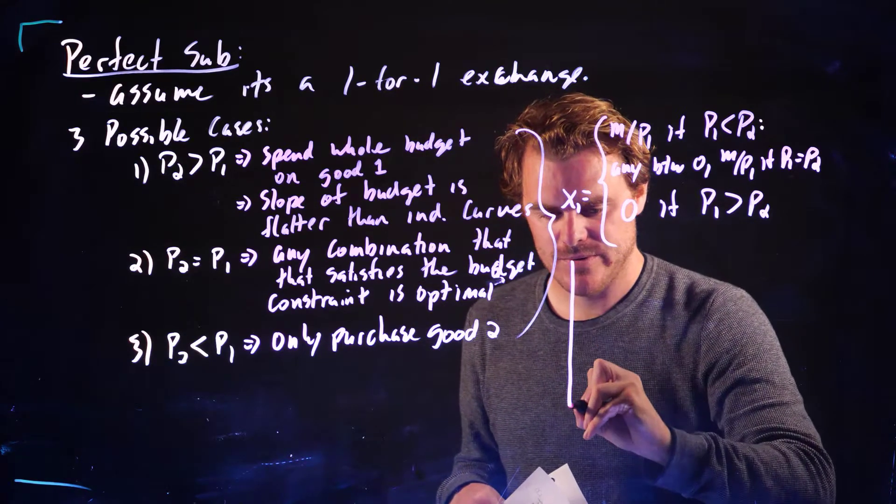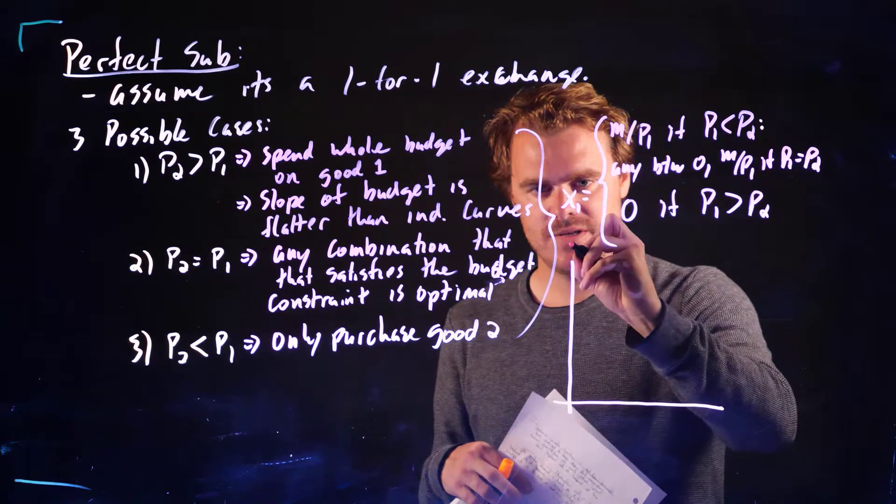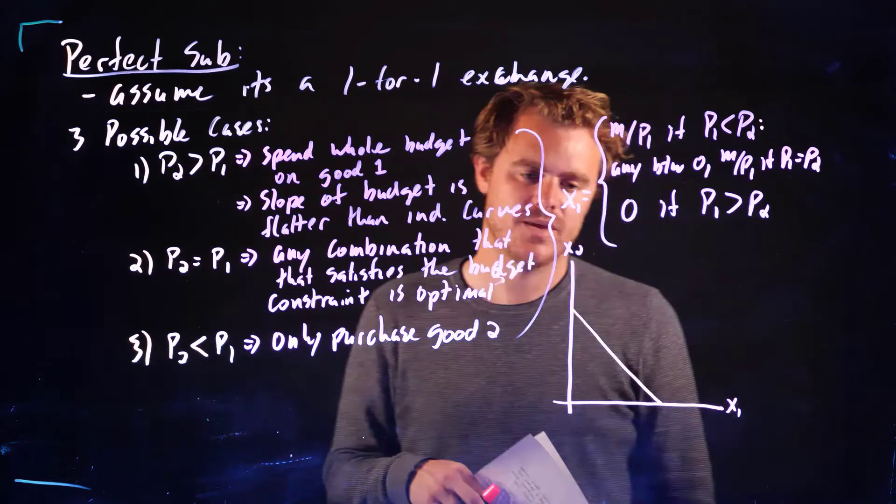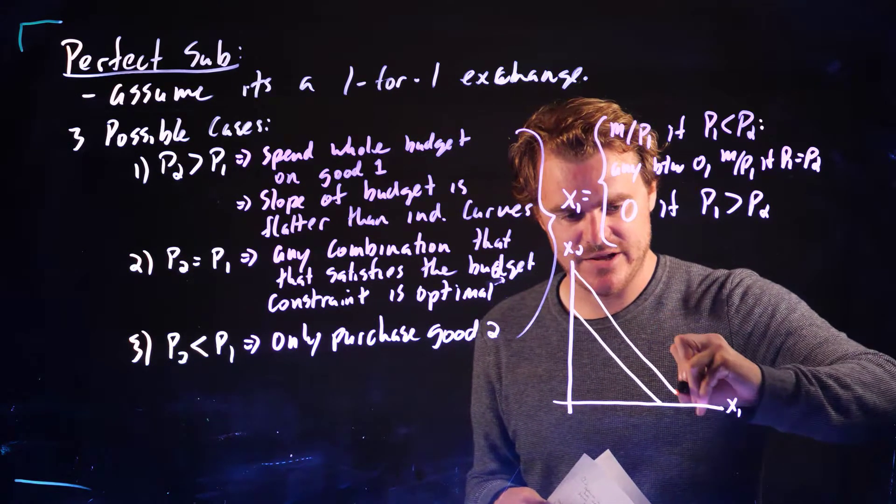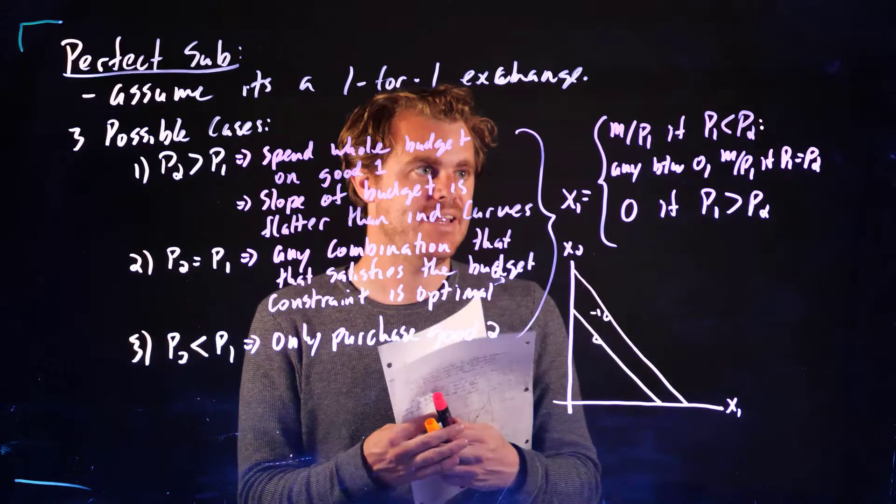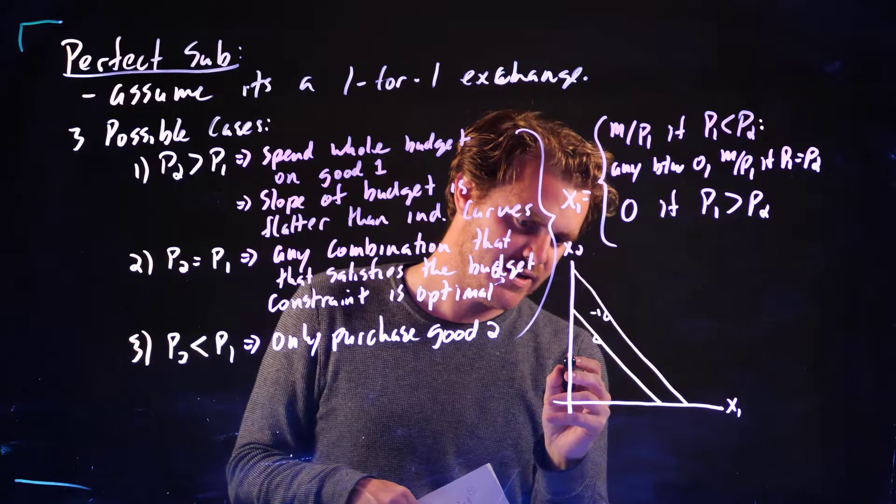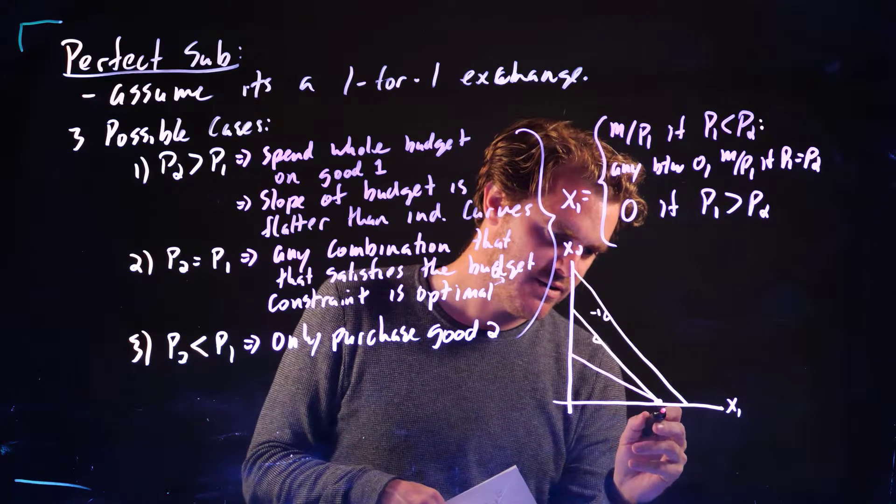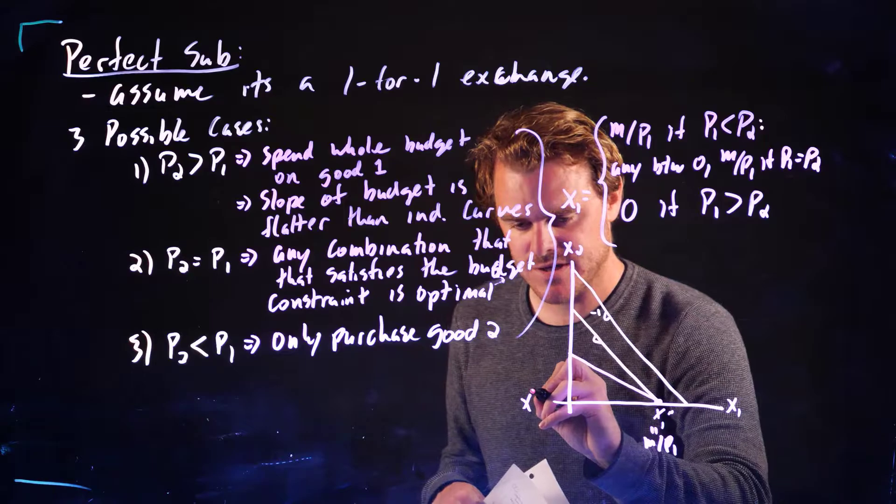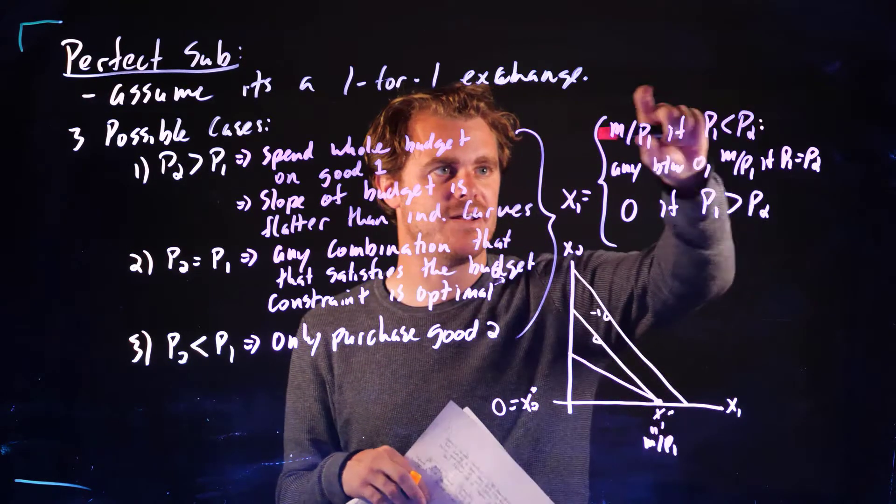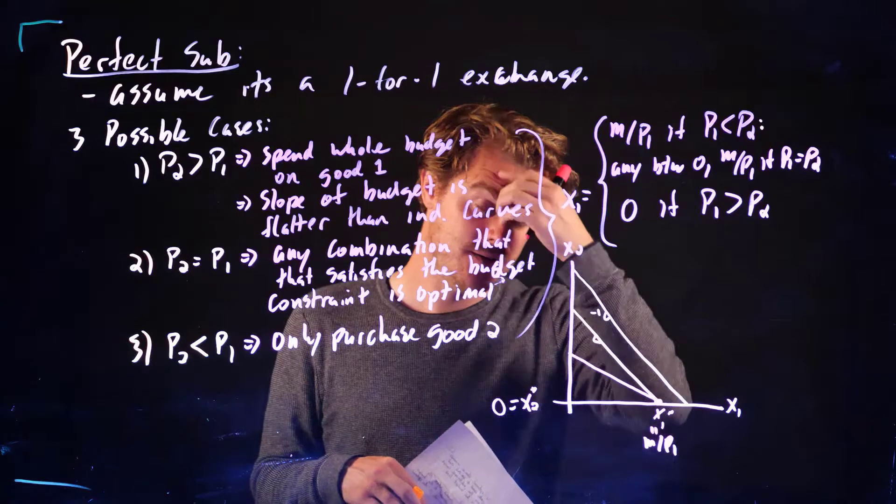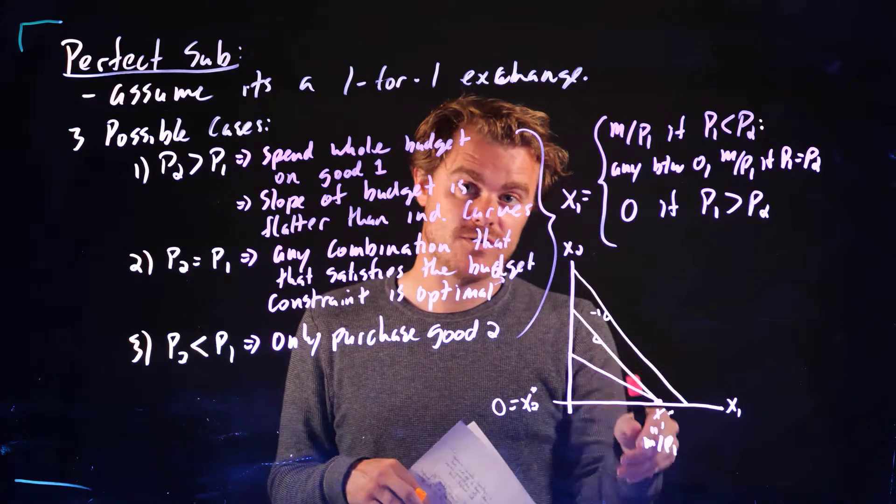So this is what our demand function looks like for these perfect substitutes. If we wanted to draw it out, we can draw the first case. Here's X2 and X1. These are indifference curves here. We have a slope of negative one if we're willing to exchange one for one. And in this first case where P1 is less than P2, our budget line is flatter.